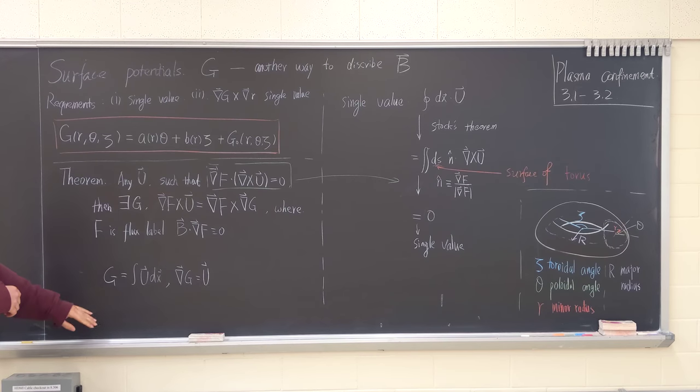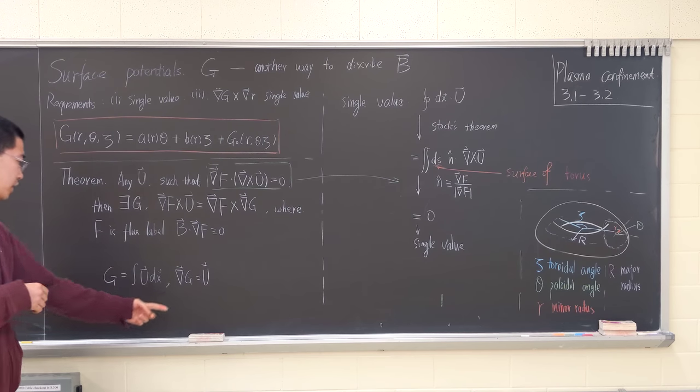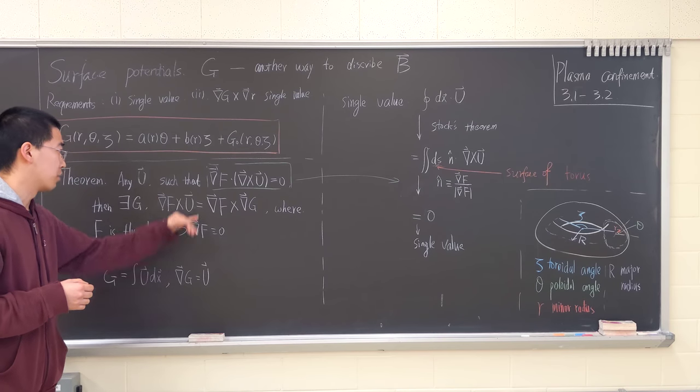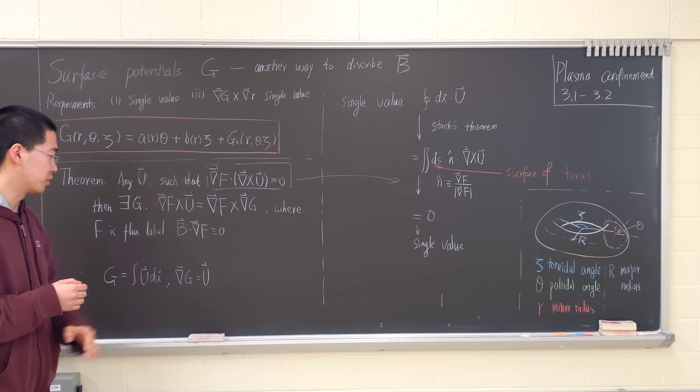The construction is relatively trivial, which is making G as a path integral of U. And then we get grad G equals U.